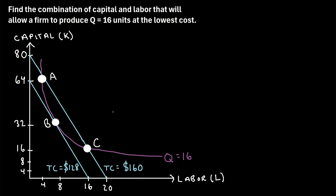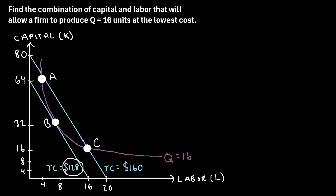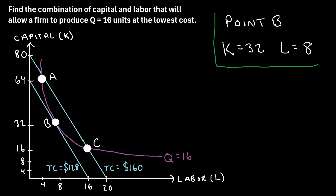So points A, B, and C are all combinations of capital and labor that allow us to produce 16 units of output. But at point B, this is the combination that allows us to produce that output at the lowest cost — so that is our answer. Point B: K equals 32 units of capital and L equals 8 units of labor. This is the point where we're able to produce 16 units of output at the lowest cost.